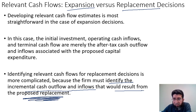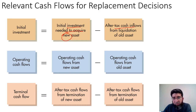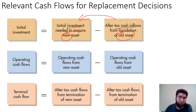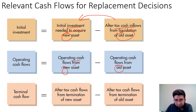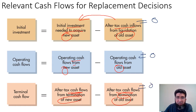In a replacement decision, the initial investment equals the cost to acquire the new asset minus the after-tax cash inflows from liquidation of the old asset. Operating cash flows equal the new asset's operating cash flows minus the old asset's operating cash flows. Terminal cash flow equals the after-tax cash flows from termination of the new asset minus the after-tax cash flows from termination of the old asset. If all the old-asset components are set to zero, the replacement decision reduces to an expansion project.